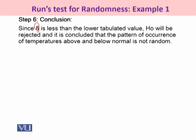Now our R value is 8, so this is your R that you have calculated from the data. It is very much less than our lower tabulated value that in our case was 10. So H0 will be rejected on the basis of the evidence we have had and we can conclude that the pattern of occurrence of temperatures above and below normal, they are not following the random process. So we cannot make use of this data for further analysis under any non-parametric statistical test because the data is showing the non-randomness.